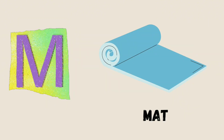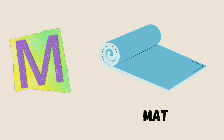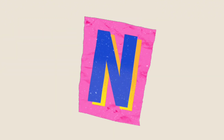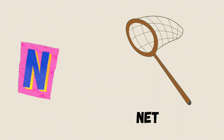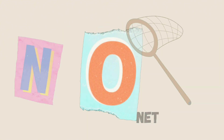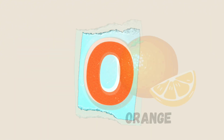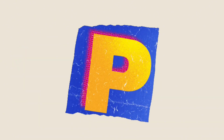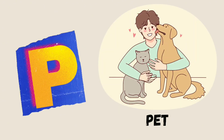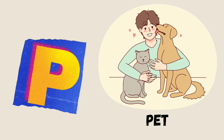M is for Mat, M-M-Mat. N is for Net, N-N-Net. O is for Orange, O-O-Orange. P is for Pet, P-P-Pet.